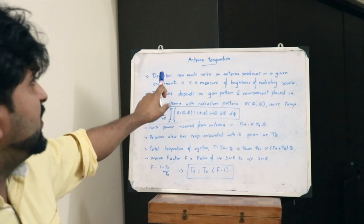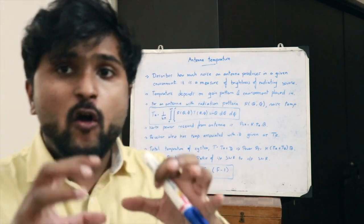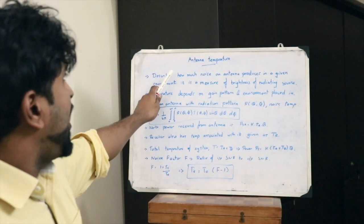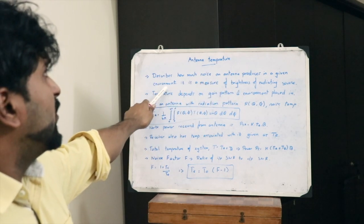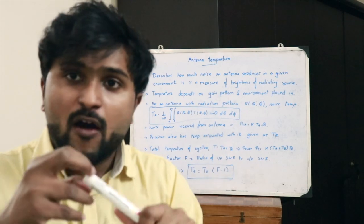Hello guys, welcome to another video. Today we will be discussing antenna temperature. Antenna temperature describes how much noise a particular antenna produces in a given environment. It is a measure of the brightness or intensity of a radiating source.